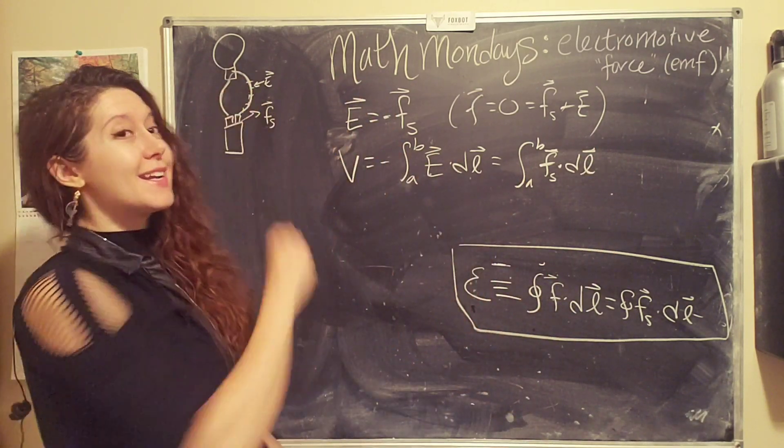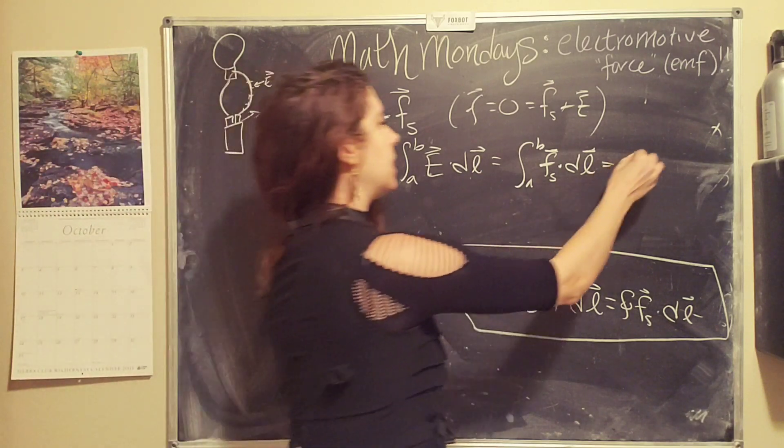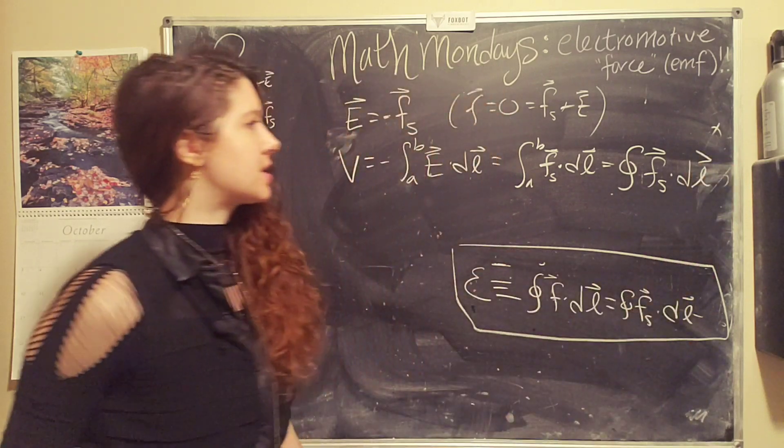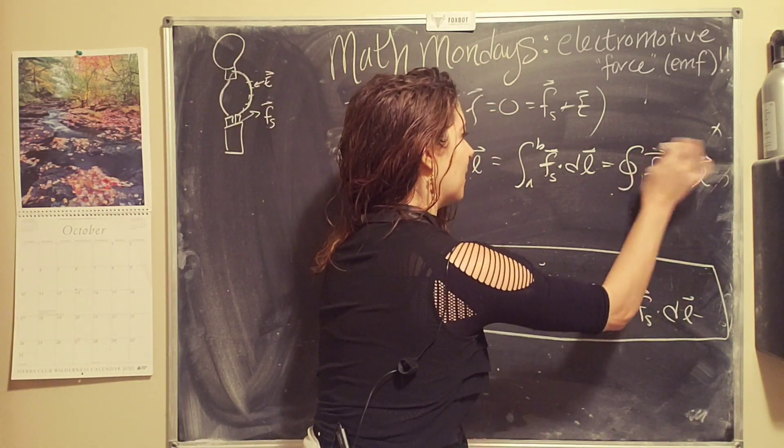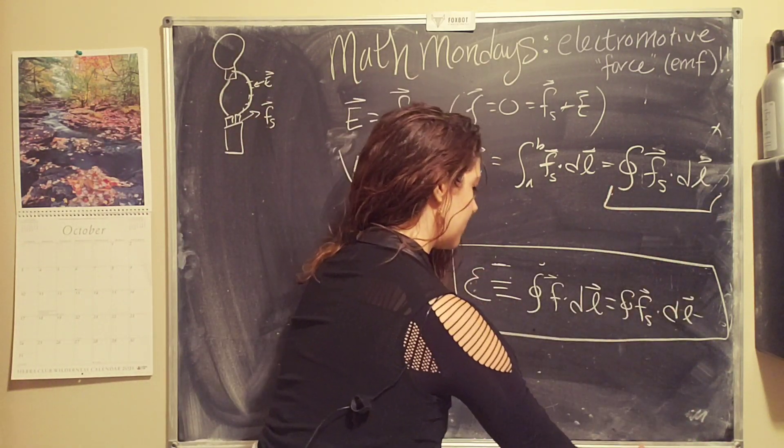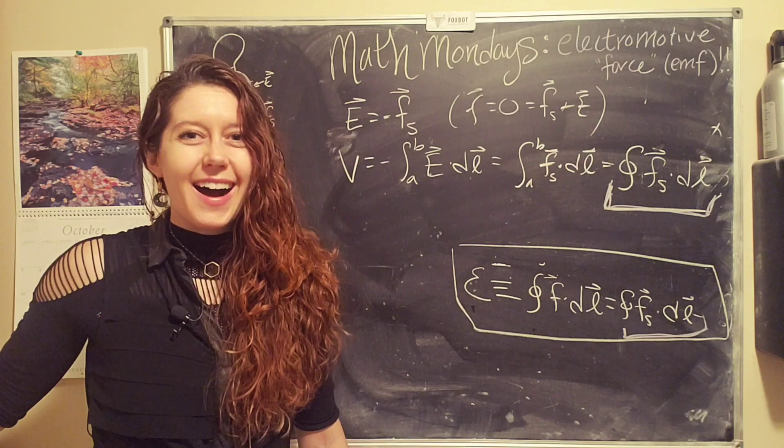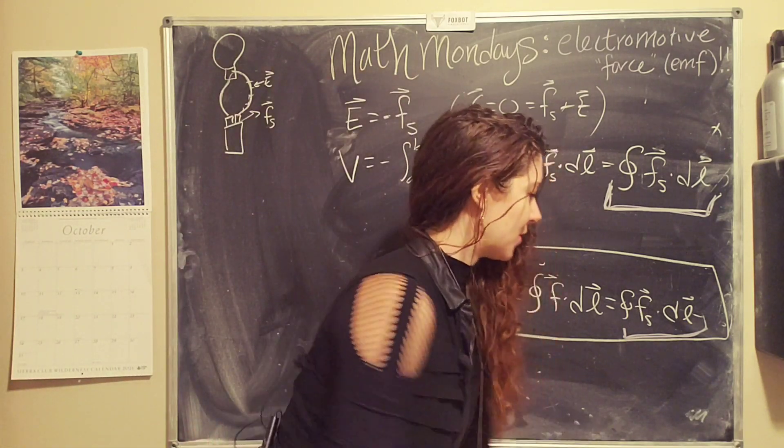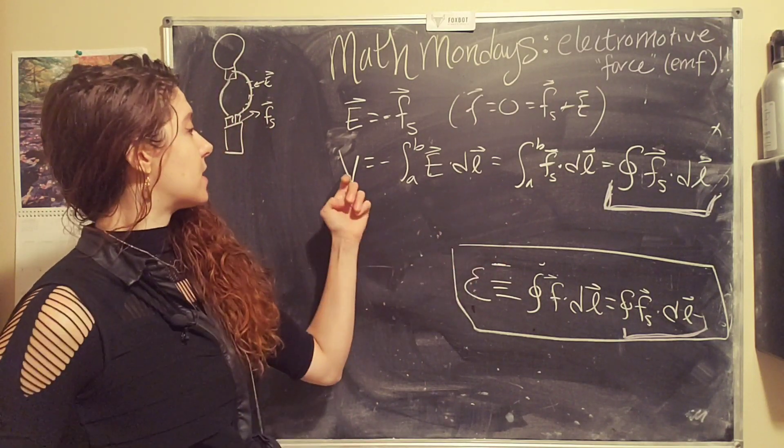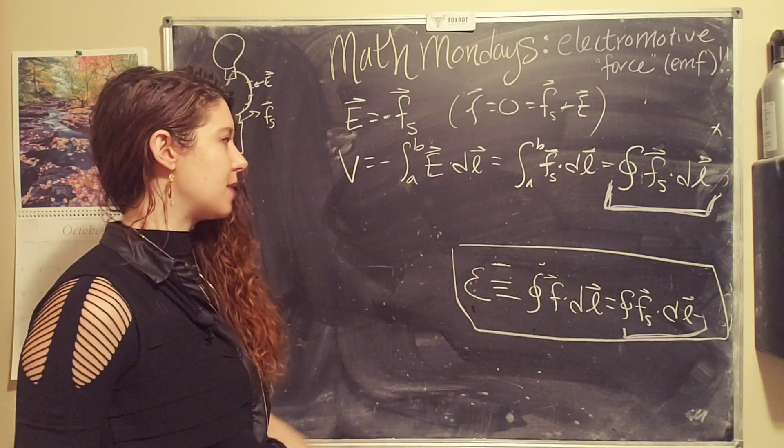And since our circuit is a closed loop, we can basically say point A is the same as point B. So we're going around a closed loop: Fs dot DL. Wait a second. This is the same as this. What? That's wild. So this says that the voltage for an ideal battery is the same as the EMF.